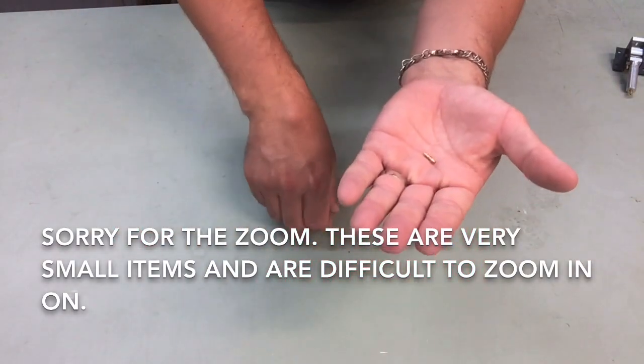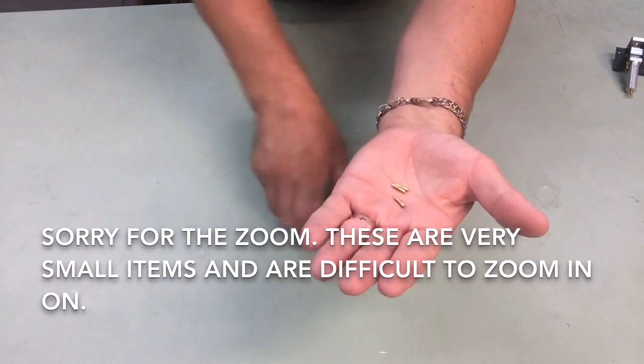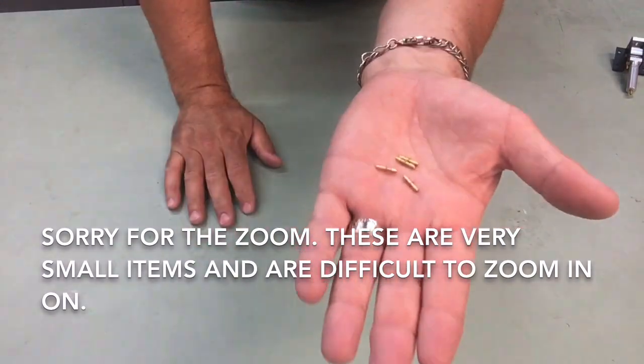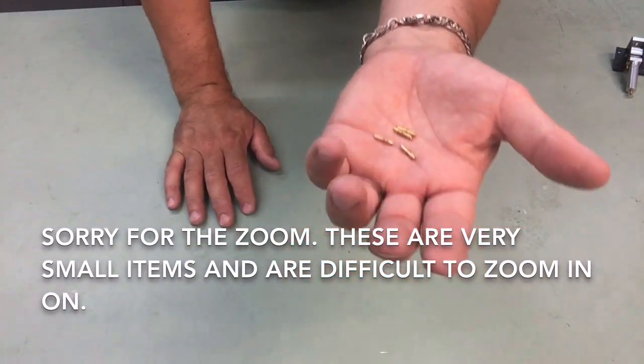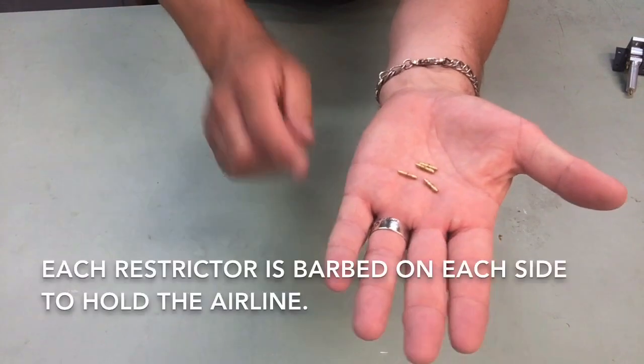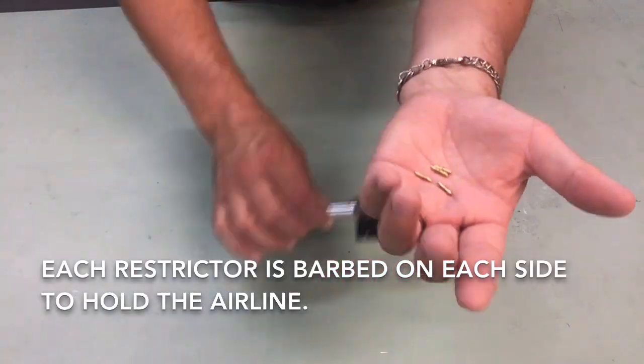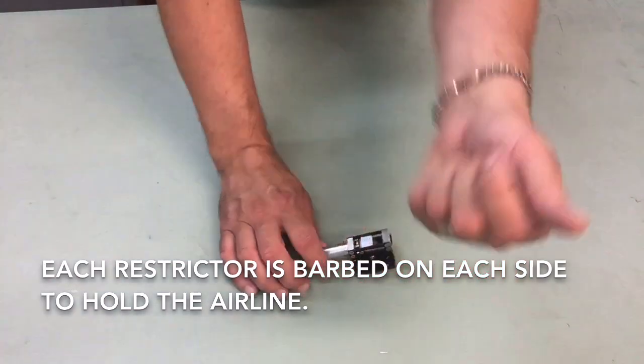These are very simply used. You cut your airline and place the airline in each side. Now, here comes the complicated part.